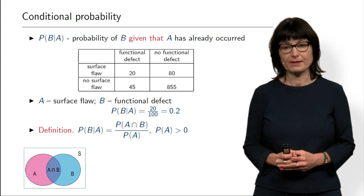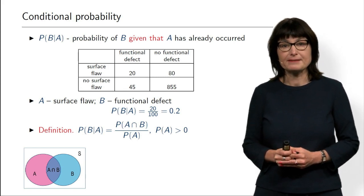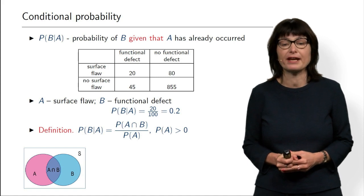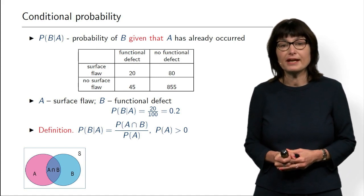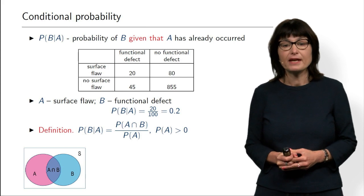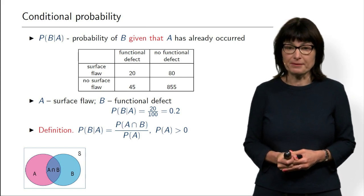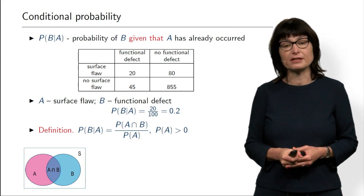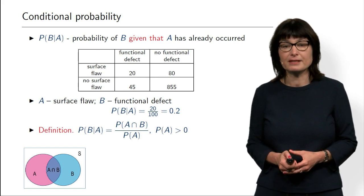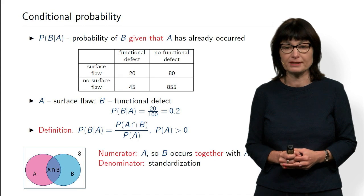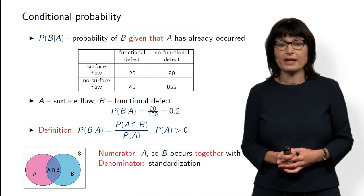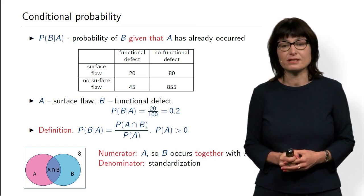Why is intersection important? Because we know that A already happened, and now we are interested in the probability of B given that A already happened. The only way for B to happen is to happen together with A. So we are actually interested in the probability related to this intersection — the probability of intersection A and B. However, we know A already happened, so we shouldn't normalize with respect to the entire sample space, but only with respect to the probability of A. In the numerator we have the probability that A and B occur together, and in the denominator we have standardization with respect to A.